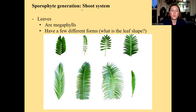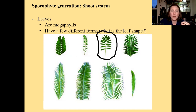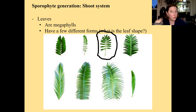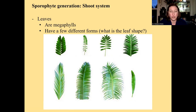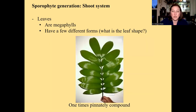Here's a bunch of different cycad leaves. Cycads tend to have a one-times pinnately compound leaf. If this sounds confusing, go back to the fern lecture where we covered leaf shapes. If I take that leaf more closely, you can see it's one-times pinnately compound — this whole thing is a single leaf and it has leaflets, or pinna. It only has one level of division — the leaflets look like one solid thing.